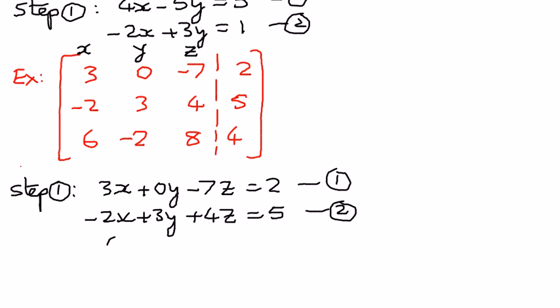And our third equation is 6x minus 2y plus 8z is equal to 4. This is our third equation.